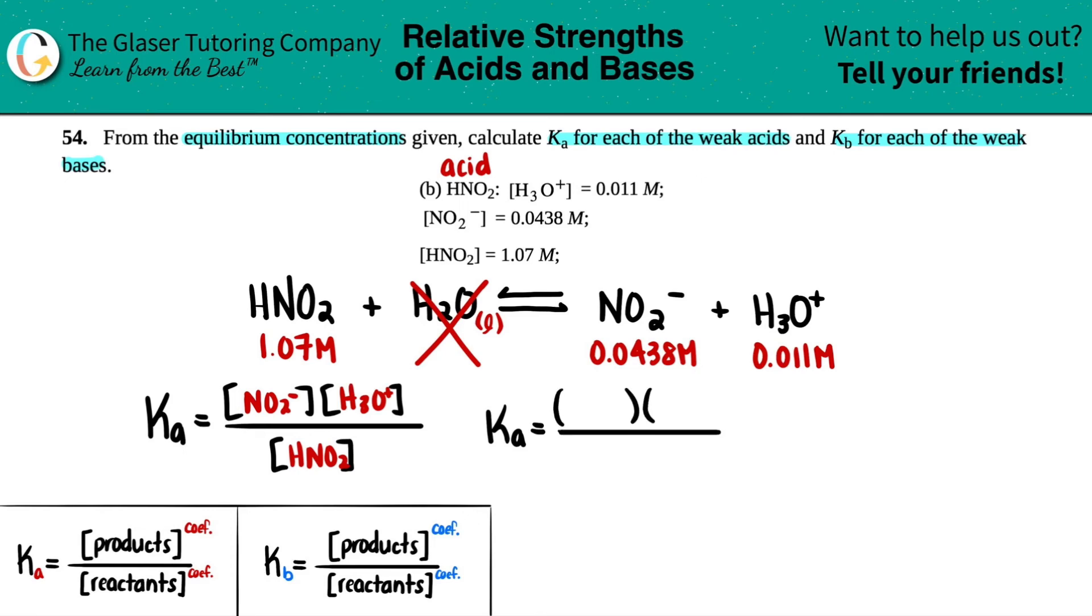Let's now plug in the actual numbers. So we'll do the three setup, the two on the top, the one on the bottom. So NO2 was 0.0438. Hydronium was 0.011. And then nitric acid was 1.07. Let's plug that into the calculator and then we get our answer.